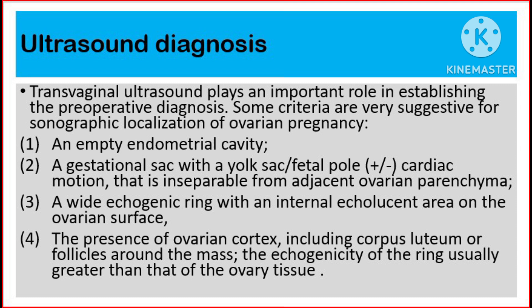Number 4: The presence of ovarian cortex, including corpus luteum or follicles around the mass. Number 5: The echogenicity of the ring is usually greater than that of the ovarian tissue.